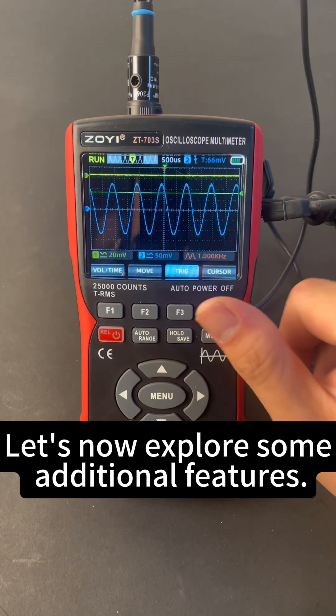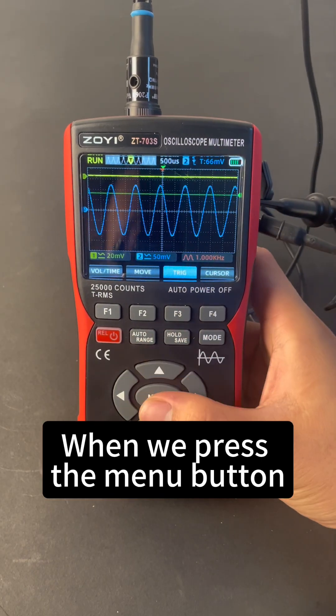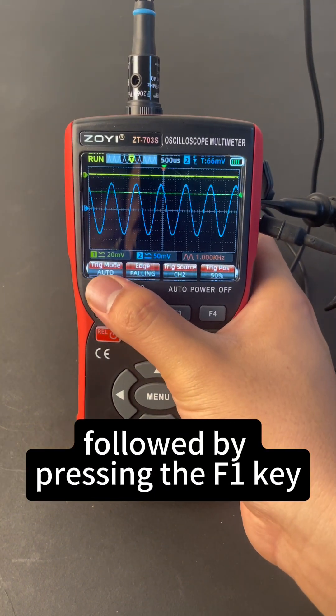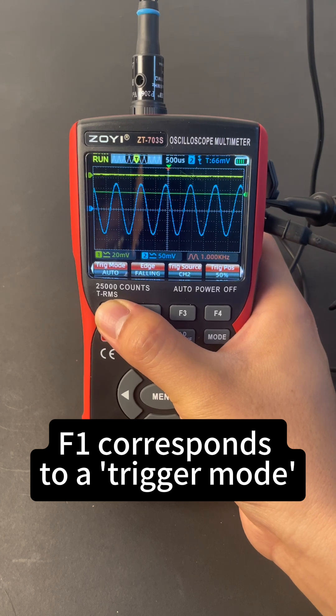Let's now explore some additional features. When we press the menu button, then the right arrow key, followed by pressing the F1 key. F1 corresponds to a trigger mode.